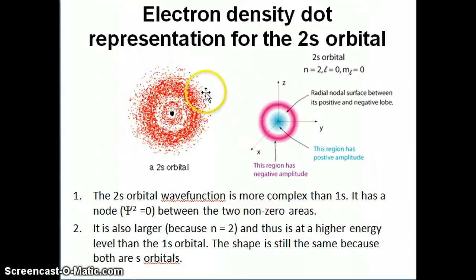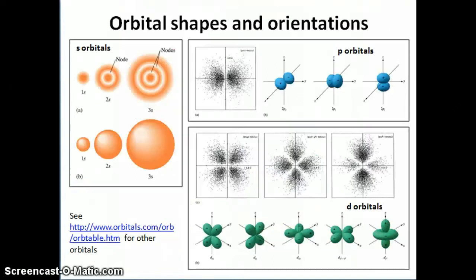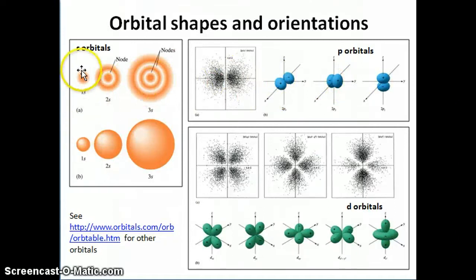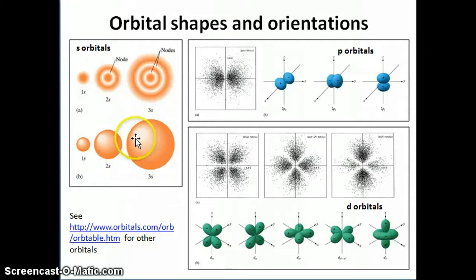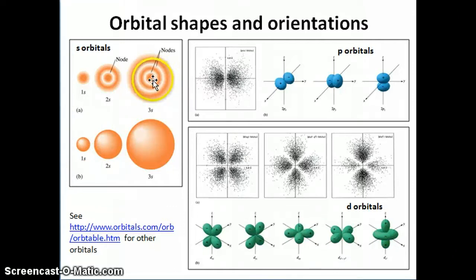The first way to represent the probability is to use the dot density or electron dot density representation. We talked about the 1s and 2s orbitals in the previous video. Here's a collection of different orbitals represented by dot density. For the 2s, there is a node in between; for the 3s, it's again just a bigger orbital, but the shape is the same because they're all s orbitals. For the 3s, you have two nodes, which are the white areas, indicating zero probability of finding the electron there.